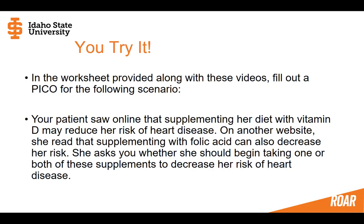Having gone through those examples, I'd like you to give this a try. A worksheet has been provided alongside these videos. After this video, go to your worksheet — the first question has a table that says PICO. Take a look at the following scenario and fill out a PICO for it: Your patient saw online that supplementing her diet with vitamin D may reduce her risk of heart disease. On another website, she read that supplementing with folic acid can also decrease her risk. She asks whether she should begin taking one or both of these supplements to decrease her risk of heart disease.